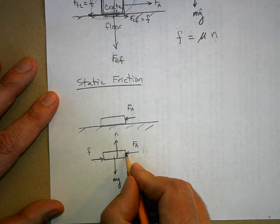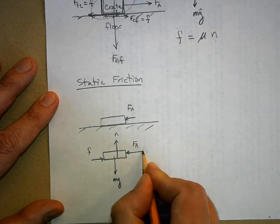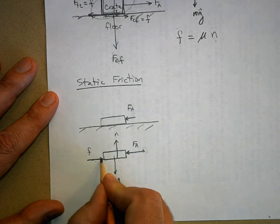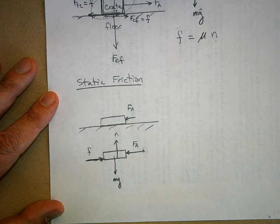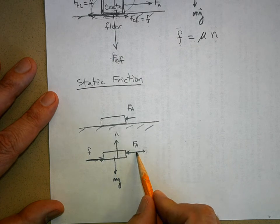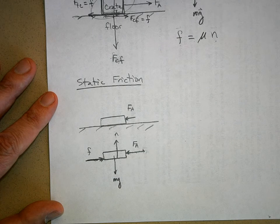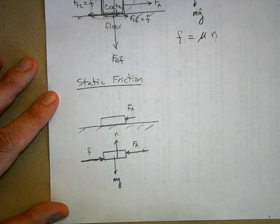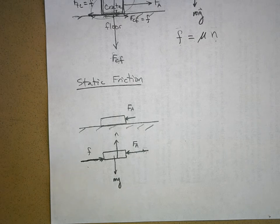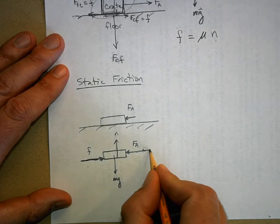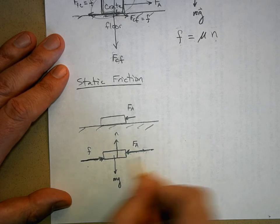Now, if I make the applied force a little bit bigger, what has to happen to the static friction force? It has to become bigger as well. And why is that? The eraser needs to stay in equilibrium, which means these two forces have to cancel each other out. So the force of friction gets a little bit bigger until we've exceeded the maximum possible force of friction, and then the object will start to slide. What we measure is the applied force, and then we notice that the object is starting to slide.